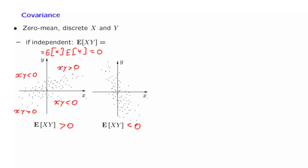So here we have a positive expectation, and here we have a negative expectation of x times y. This quantity — the expected value of x times y — tells us whether x and y tend to move in the same or in opposite directions. And this quantity is what we call the covariance in the zero-mean case.